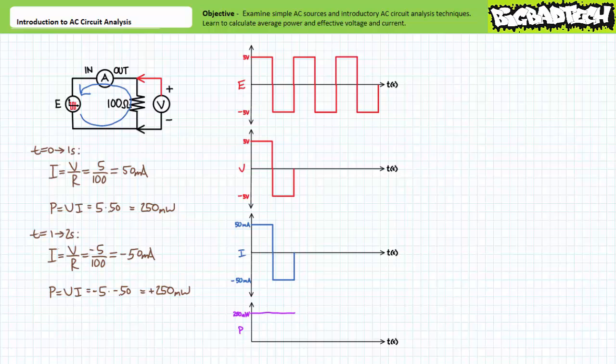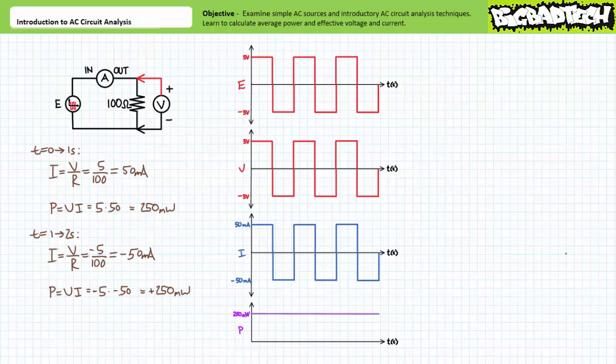Even accounting for these sign changes results in positive power. Negative voltage times negative current results in positive dissipation of power. If the process repeated itself, plots of voltage across the resistive load, current through it, and power dissipated as a function of time would look like this. Long story short, during both the positive and negative halves of the cycle, the 100-ohm resistive load experiences a 5-volt drop, 50 milliamps of current, and dissipates positive 250 milliwatts of power.